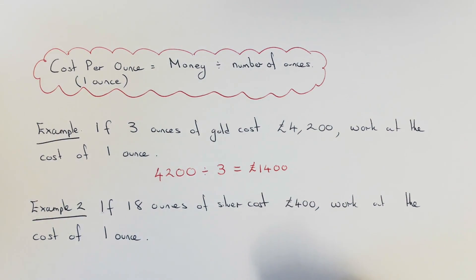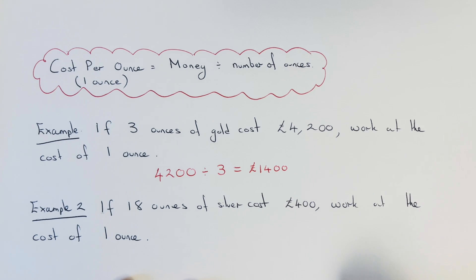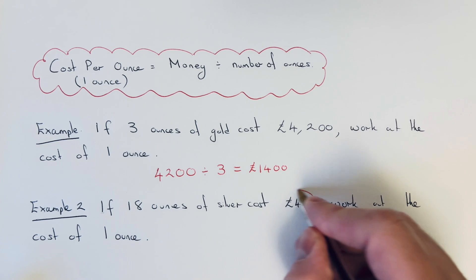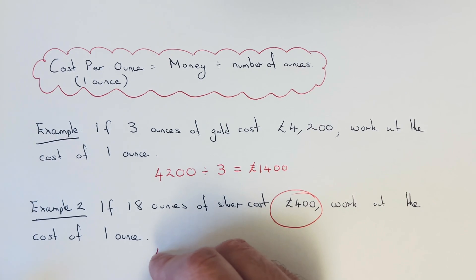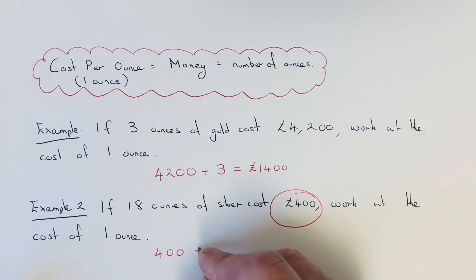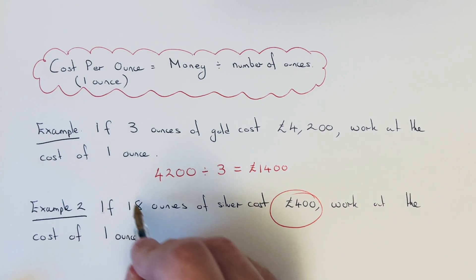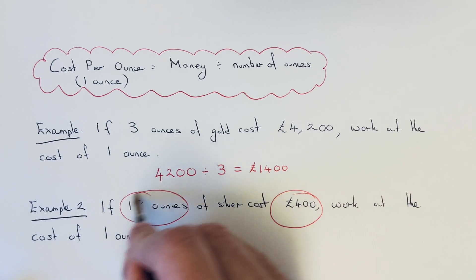Or the cost per ounce. Let's have a look at the second example. Example 2: If 18 ounces of silver cost £400, work out the cost of 1 ounce. Again, we need to start with the money first and divide it by the number of ounces which we're buying, which is 18.